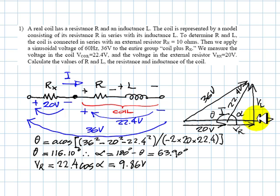And the voltage in the inductive part of the coil, this one, is 22.4 sine of alpha, 20.12 volts.